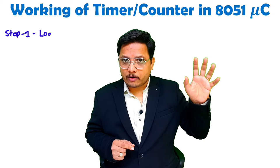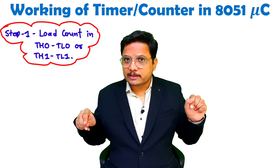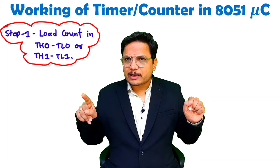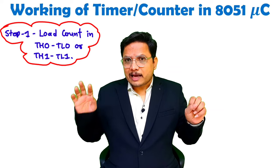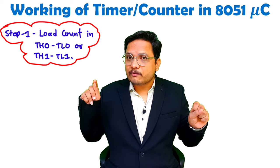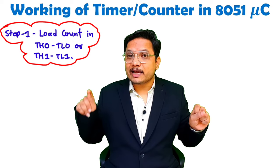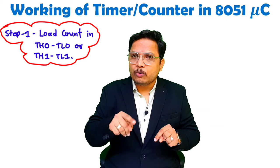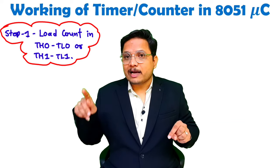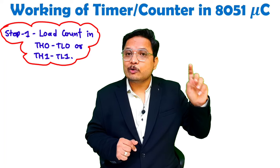Step number 1 is to load the value of count. With the 8051 we have two timers — Timer 0 and Timer 1. Both are 16 bits in size and both are up counters. Timer 0 uses TH0 and TL0 registers, and Timer 1 uses TH1 and TL1. To load the count in Timer 0, write MOV TH0, #some_value and MOV TL0, #some_value. Likewise you can load the count in Timer 1 using TH1 and TL1.